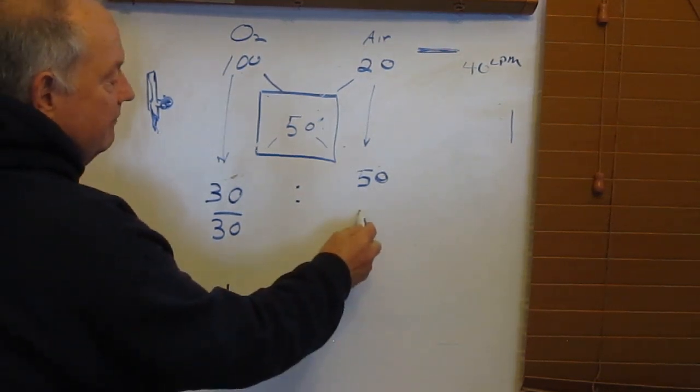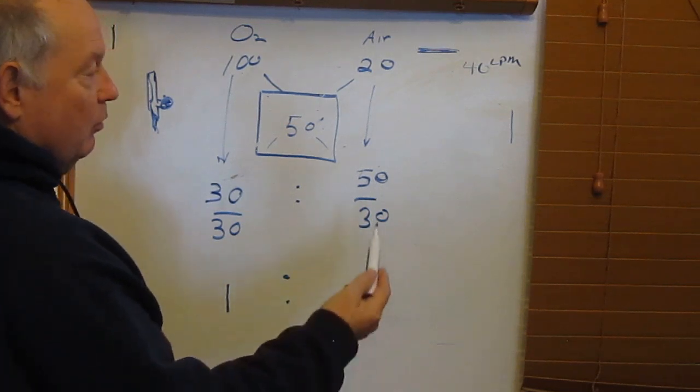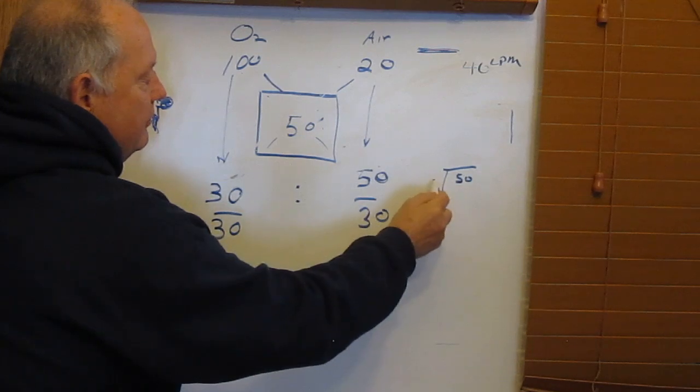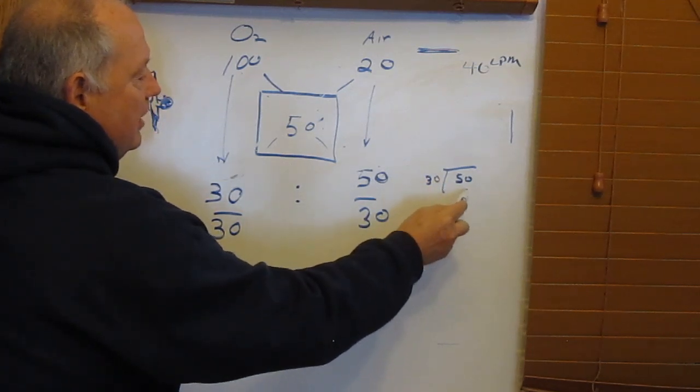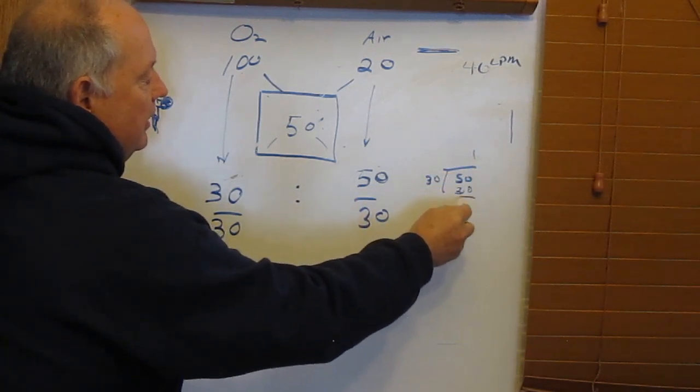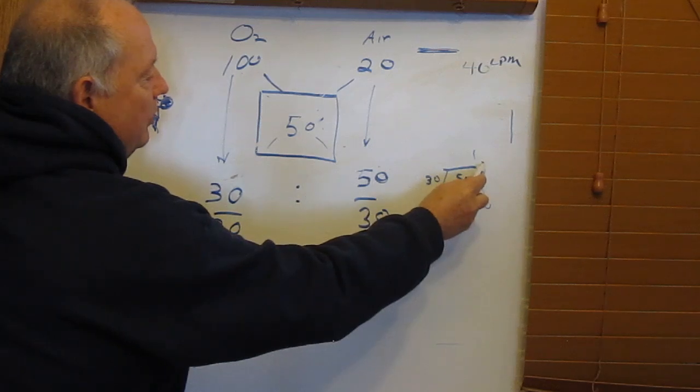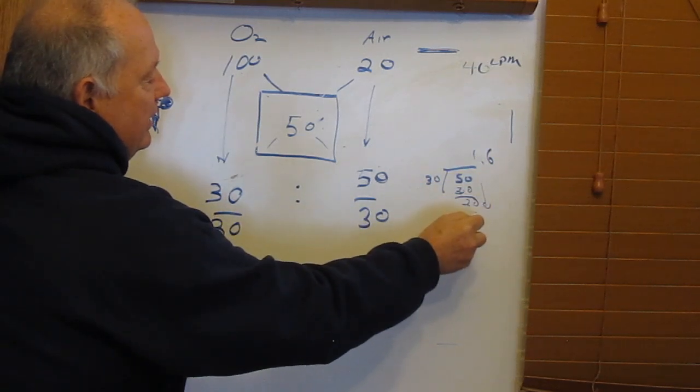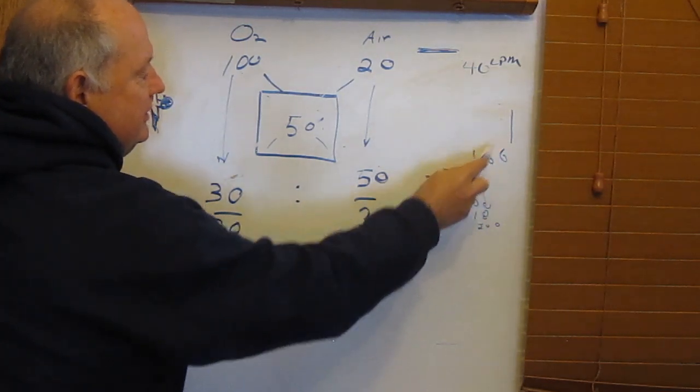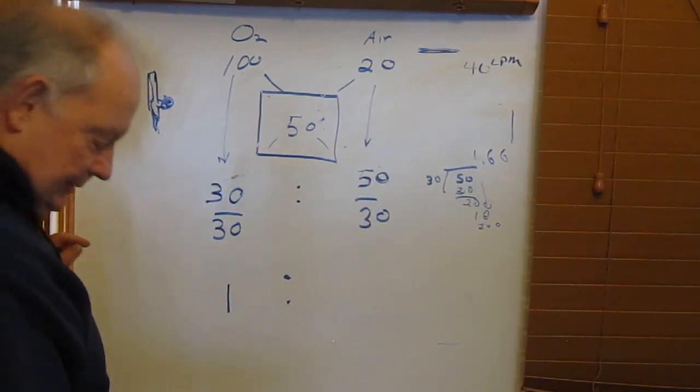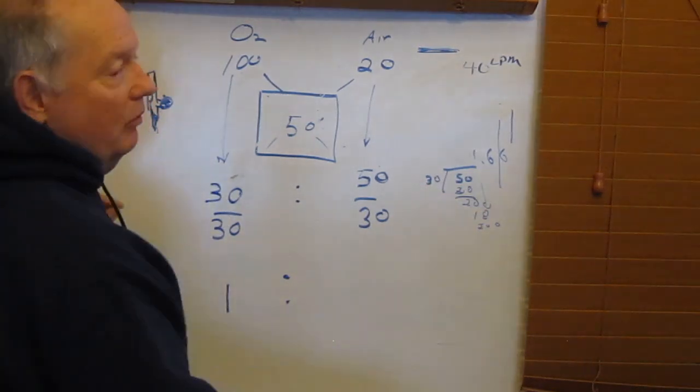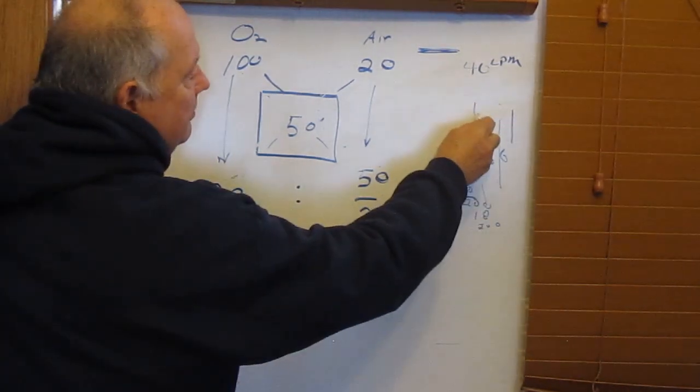And we divide 50 by 30. And what do we get when we divide that? That of course is long division. Remember how to do this? That goes 1, 30, 20 left over. Bring down another zero. That goes 0.6 and 18, 20 left over, 200. It's a repeating decimal as you can see.